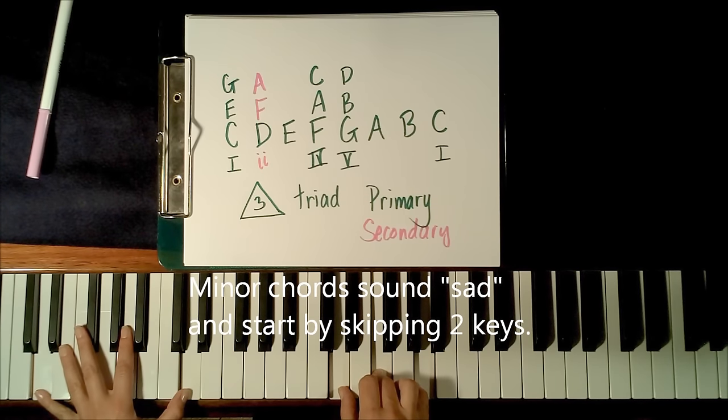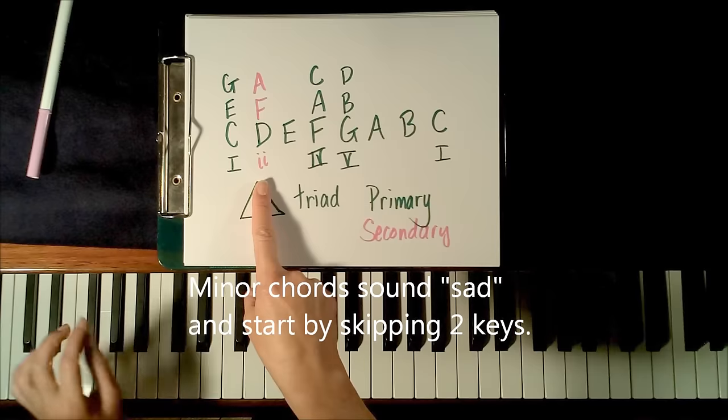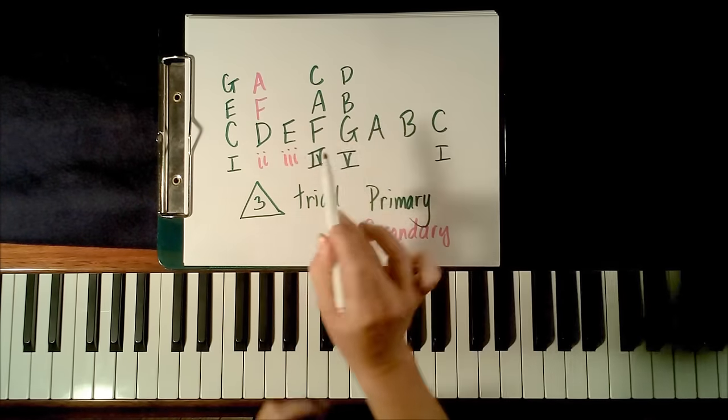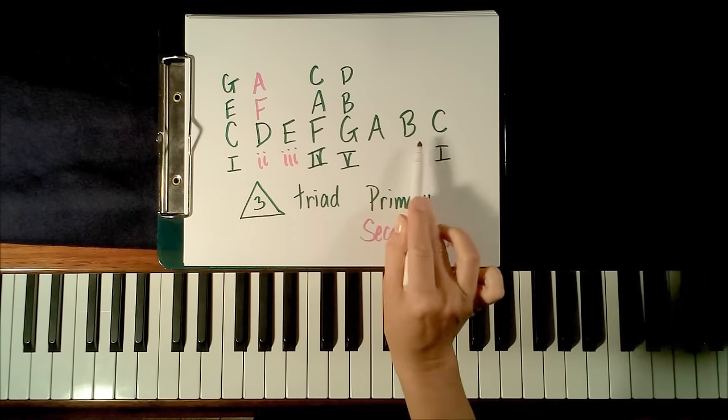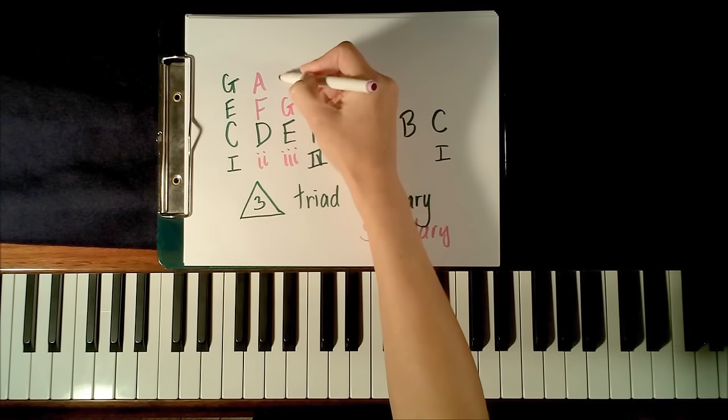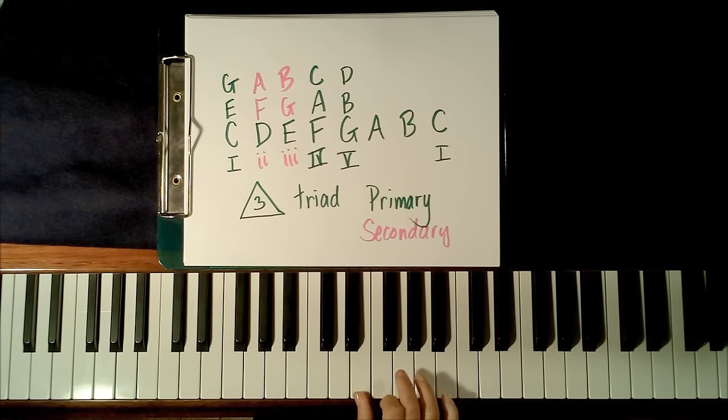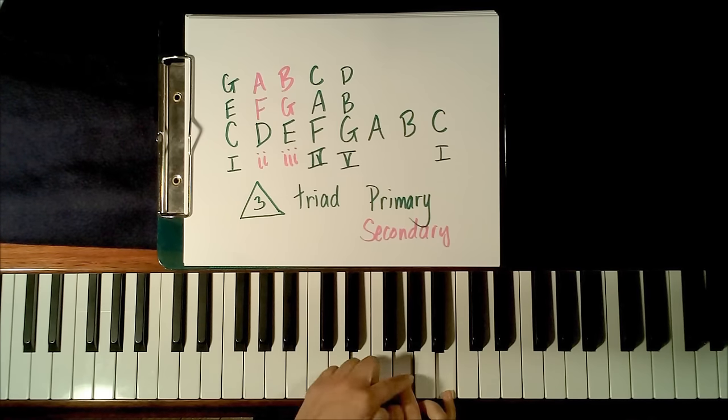So this secondary chord is chord number two, and we can also form a three chord, and it will use the notes E, G, and B. Let's discover whether this will have a major sound or a minor sound. So I'm going to only place the notes, and I'm going to show them to you here, E, G, and B.